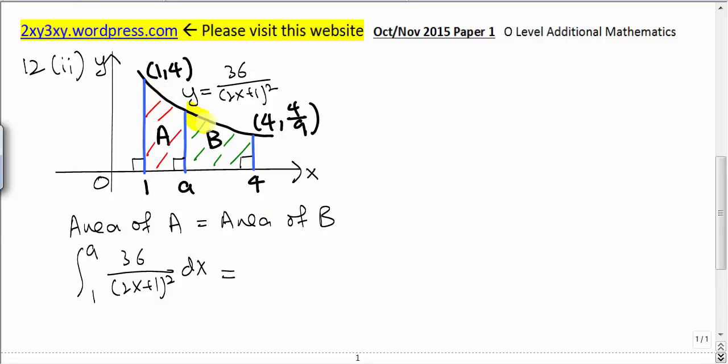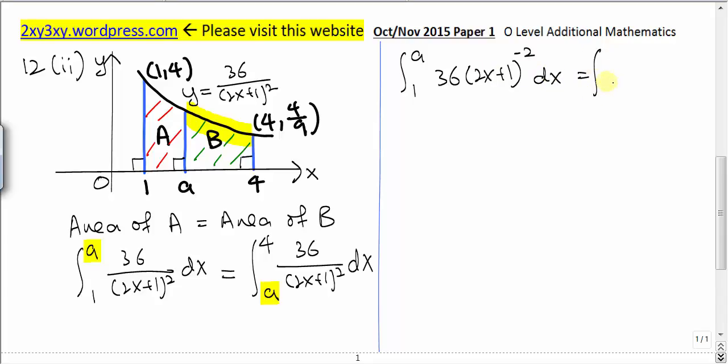Area of B: we integrate this part of the curve from x equals A to x equals 4. So integrate from A to 4, the same curve. The unknowns are at the limits, so we perform the integration first, then substitute the limits. Let's perform the integration by moving (2x+1) squared up first. So we get 36(2x+1) to the power of negative 2. Since 36 is a constant, we can remove 36 from both sides.